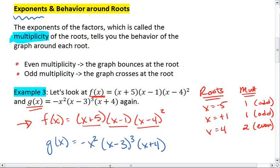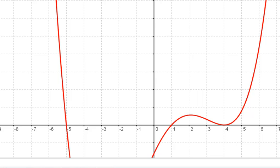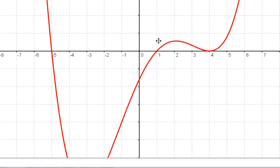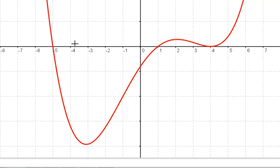Let's go to the graph. Remember, we had a multiplicity of 1 for x equals negative 5, an odd number. So our graph crosses the x-axis. It continues down and then eventually comes back up towards our other root of x equals positive 1.